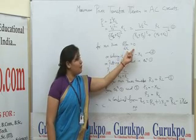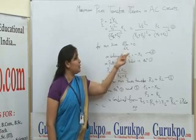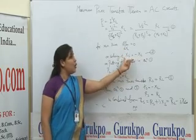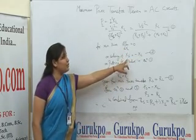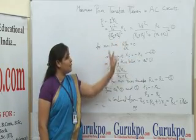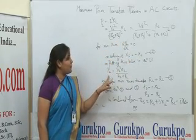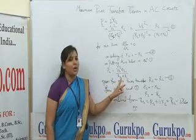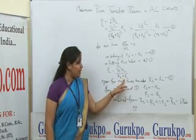Solving this equation, we get that Xs equals minus Xl. On putting these values in equation number 1, we get that Pl equals Vs²Rl upon (Rs + Rl)².